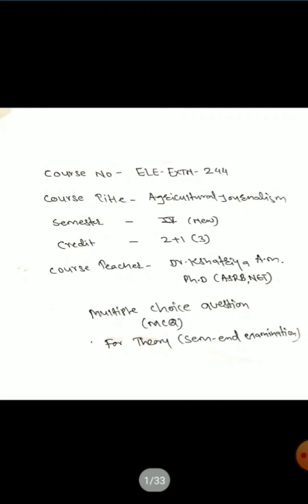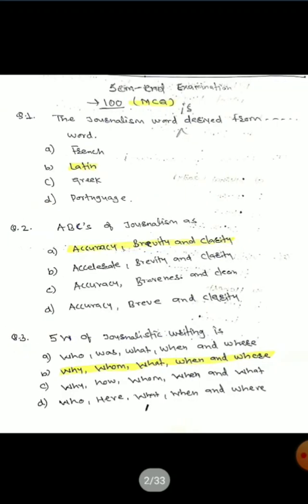The course title is Agriculture Journalism, Semester 4, graded 2+1, that is 3 credits. We are going to discuss 100 questions in four parts — a multiple choice series. This will be beneficial for your theory examination. Today we will discuss 25 questions along with their options and correct answers.